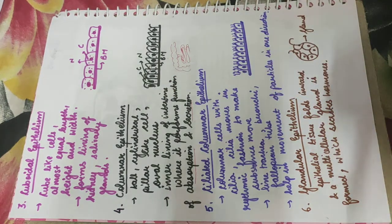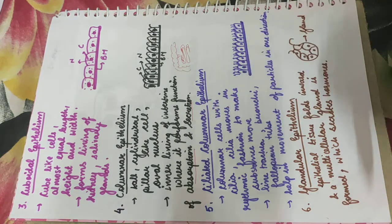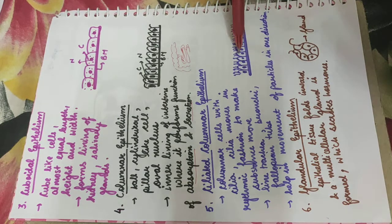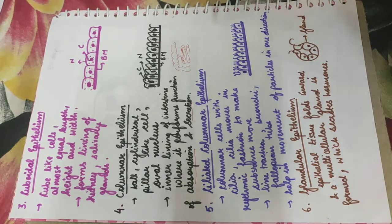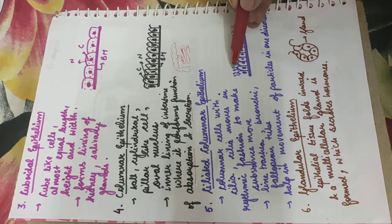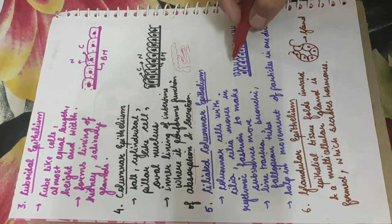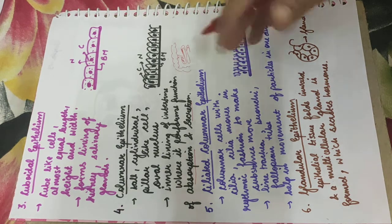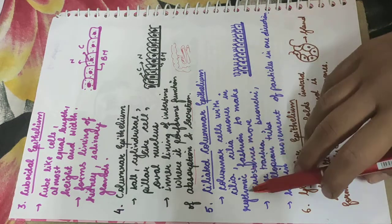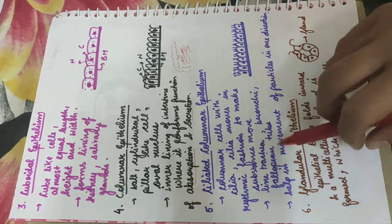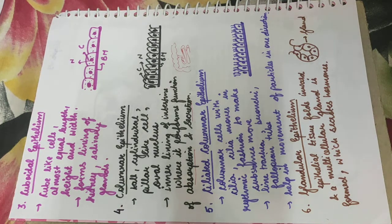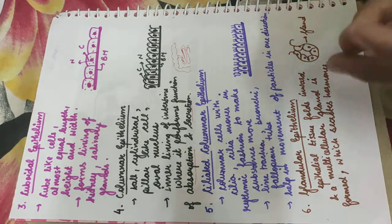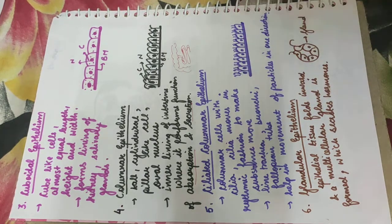Now ciliated columnar epithelium. They are just like the columnar epithelial cells, but the difference is that they also contain an additional structure called cilia. Cilia are hair-like structures and they help in the movement of substances in rhythmic fashion. Rhythmic fashion means in a particular direction.